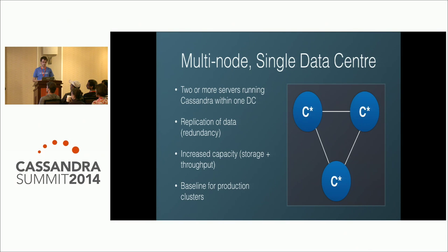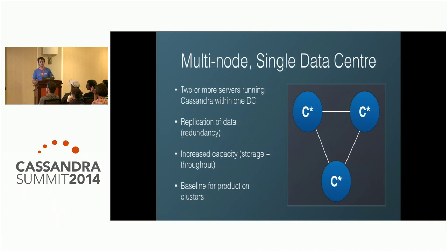The next step is a multi-node single data center deployment — your standard typical setup with a bunch of Cassandra nodes running inside a single data center. It's easy to set up but hard to get right. A shameless plug: at Instacluster we handle all the management, configuration, and deployment. You get replication between nodes, redundancy, increased throughput and storage capacity. This should be your baseline for production clusters.